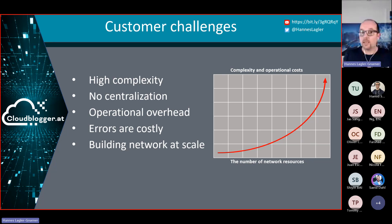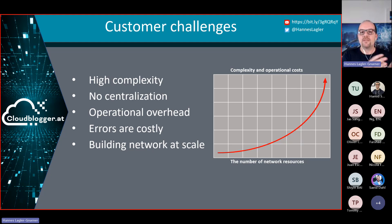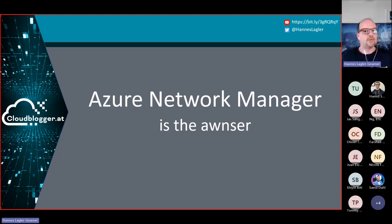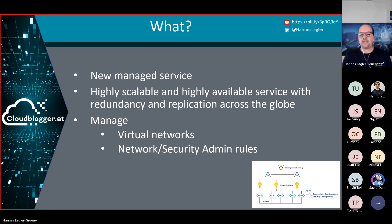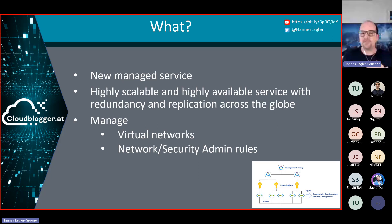Without centralized configuration, the operational overhead is huge, and when something goes wrong, errors can be really cost-intensive to troubleshoot — for example, figuring out why routing is not working correctly. Microsoft has different possibilities to centralize network configurations, and one option is Azure Virtual Network Manager. It is a new managed service, generally available for about half a year. It's fully managed by Microsoft, highly scalable, highly available, includes redundancy, and replicates configuration around the globe. You can manage your network configuration and your security admin rules.